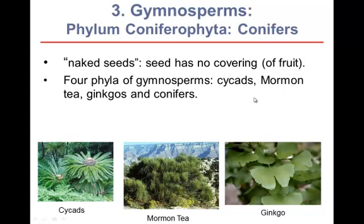The cycads, seen in the bottom left, include forms like the sago palm — though this is not a true palm. Palm trees are in fact flowering plants. The cycads have cones that they reproduce with. The second group is Mormon tea, genus Ephedra, which is common here in Arizona — you can see the Grand Canyon in the background of this photograph. Herbal ecstasy is a Chinese species of ephedra that has stimulant effects but can also cause heart attacks, so you should avoid it.